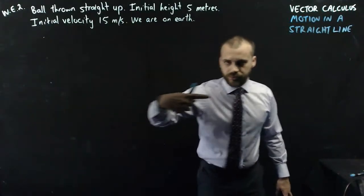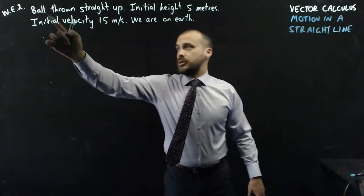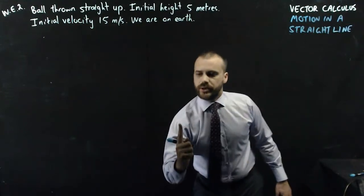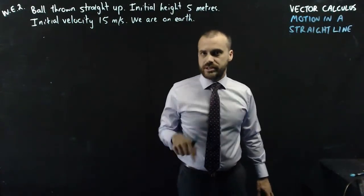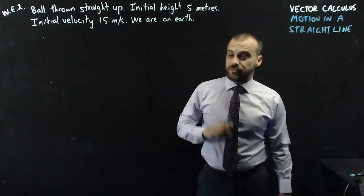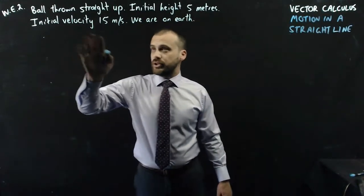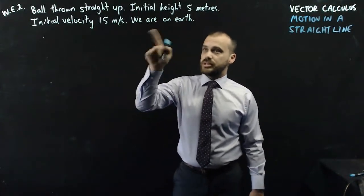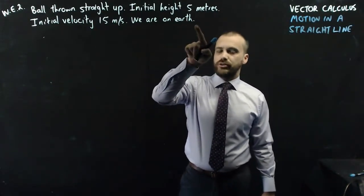In the last example, we were moving straight across. This time, a ball is thrown straight up. We're going to be moving straight up, turning around, and moving straight down again. Now the ball is thrown from an initial height of 5 meters, and its initial velocity is 15 meters per second, and we are on Earth.